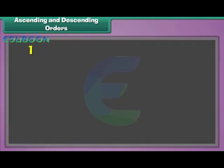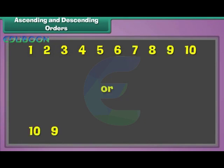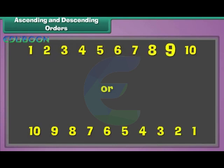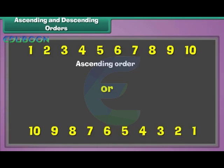Numbers can be counted upward: one, two, three, four, five, six, seven, eight, nine, ten — or downward: ten, nine, eight, seven, six, five, four, three, two, one. Arrangement of numbers from the smallest to the largest is called ascending order. Arrangement of numbers from the largest to the smallest is called descending order.